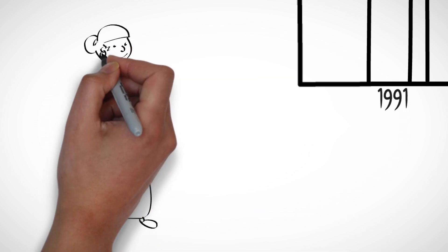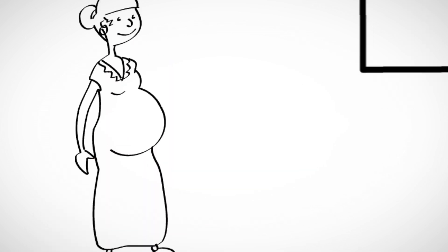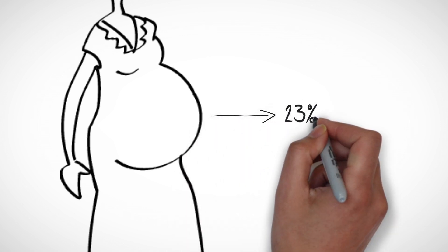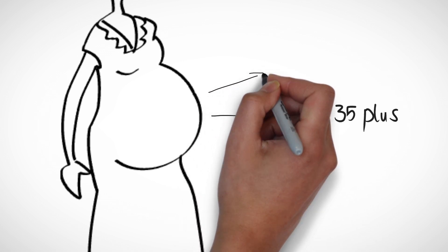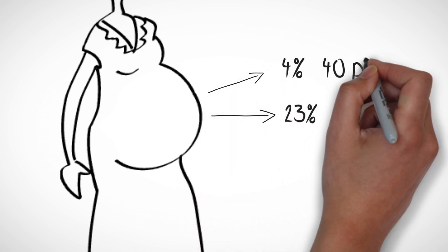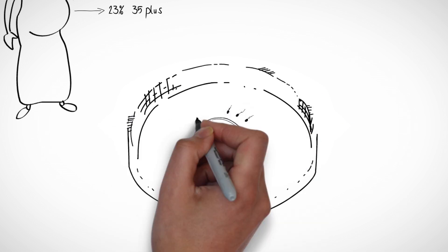And in the last 10 years, the proportion of women giving birth aged over 35 has increased from 18 to 23%. In fact, 4% of women giving birth are now aged 40+.